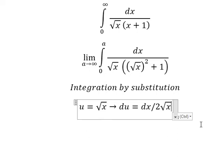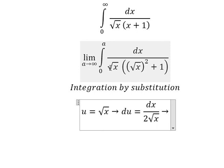Because we don't have the 2, I will move the 2 to the left, so 2du equals dx over the square root of x.